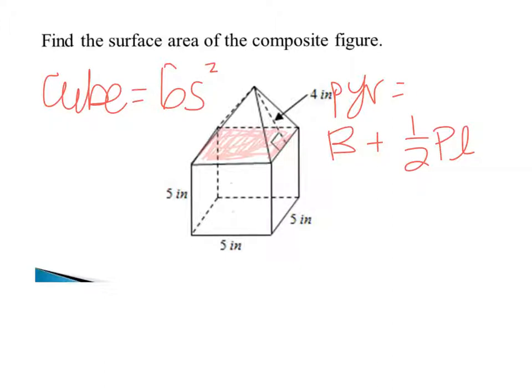So our formula is just going to be 5s² because we can't actually touch that sixth side for our composite figure.